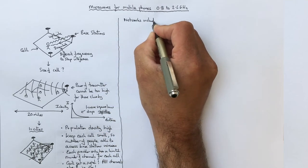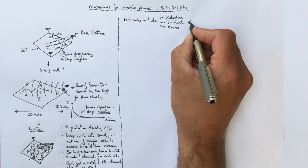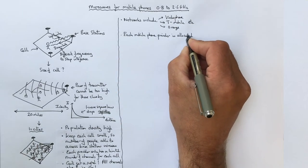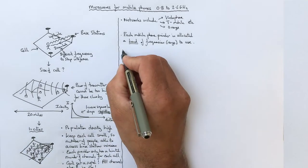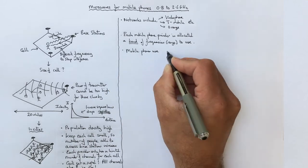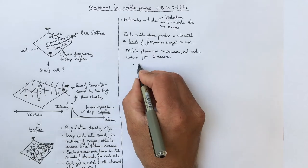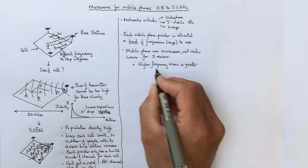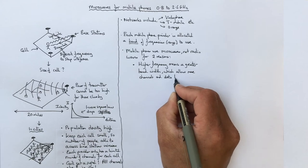Mobile phones connect to networks including Vodafone, T-Mobile, Orange etc. Each mobile phone provider is allocated a range, a band of frequencies to use. Mobile phones use microwaves not radio waves for the following two reasons. Firstly remember the high frequency of microwaves compared with radio waves gives a greater bandwidth. Which allows more channels and more data to be transferred.